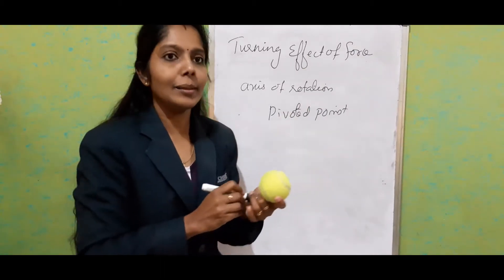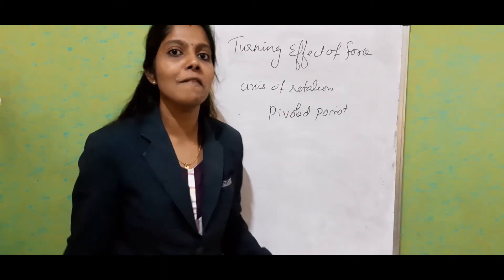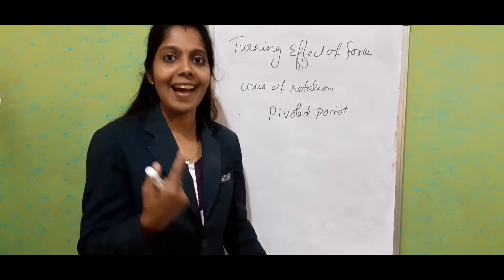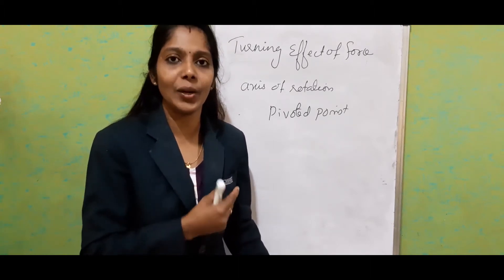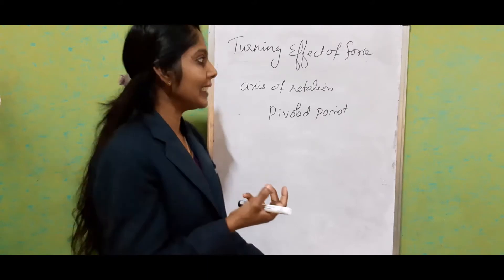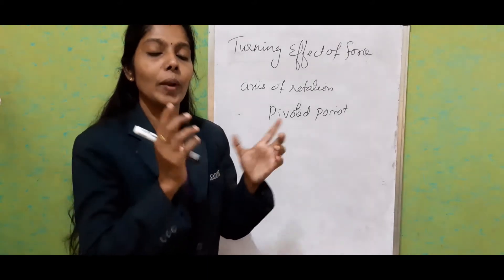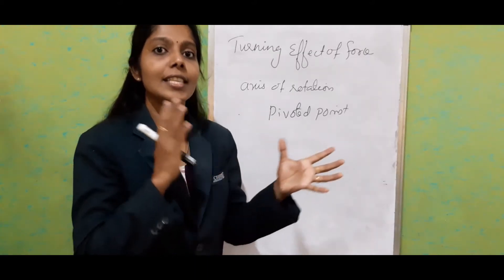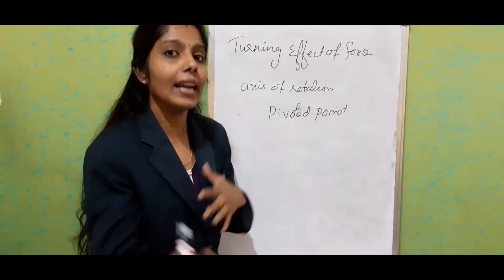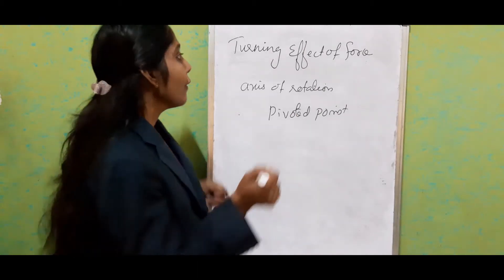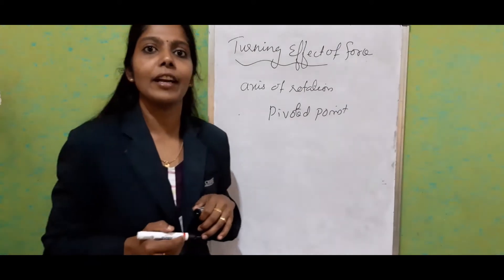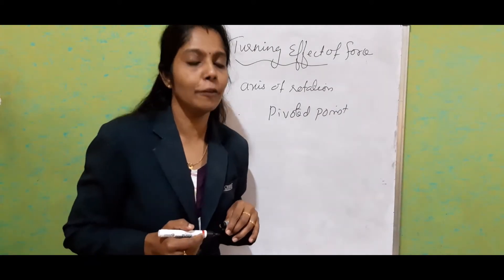Simply, if we consider the case of the earth, the earth always rotates around its axis. That rotation we can also consider as a turning effect. So when the object is rotating or turning around the pivoted point, we call it the turning effect of force.